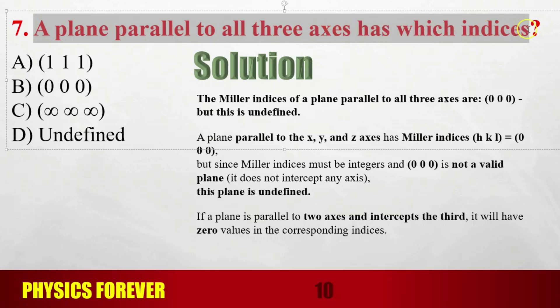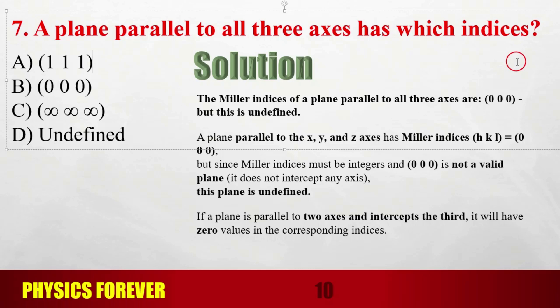In question 11, which indices correspond to a plane parallel to all three axes? The h, k, l values are not mentioned — only that the plane is parallel to all three axes. Miller indices of a plane parallel to all three axes would be 0, 0, 0, but since Miller indices must be integers and 0,0,0 is undefined, the correct answer is undefined.